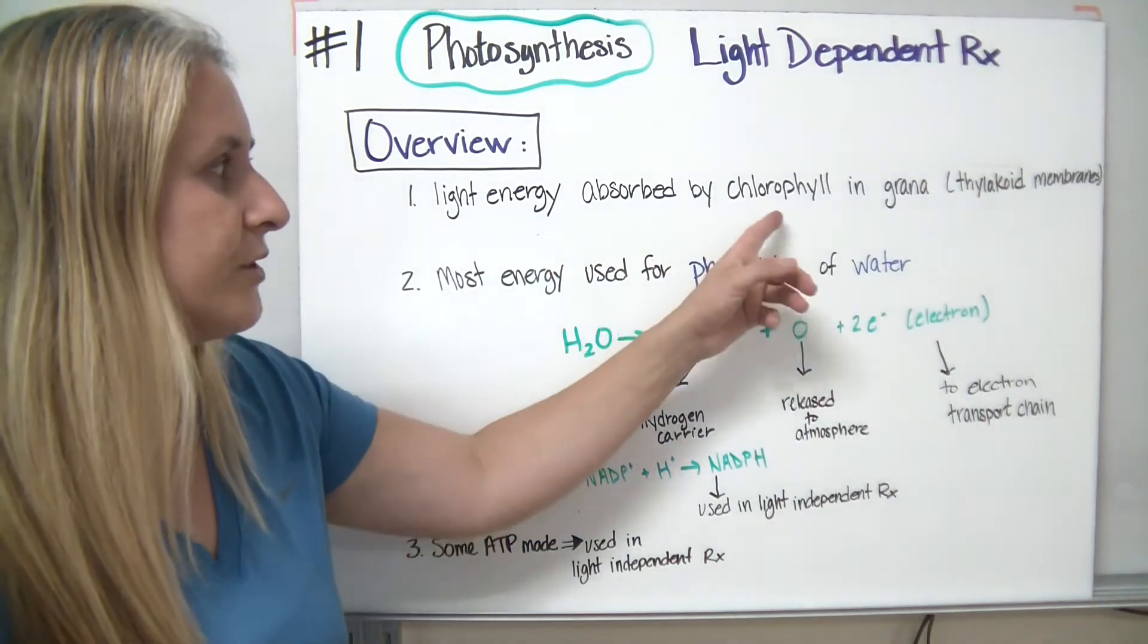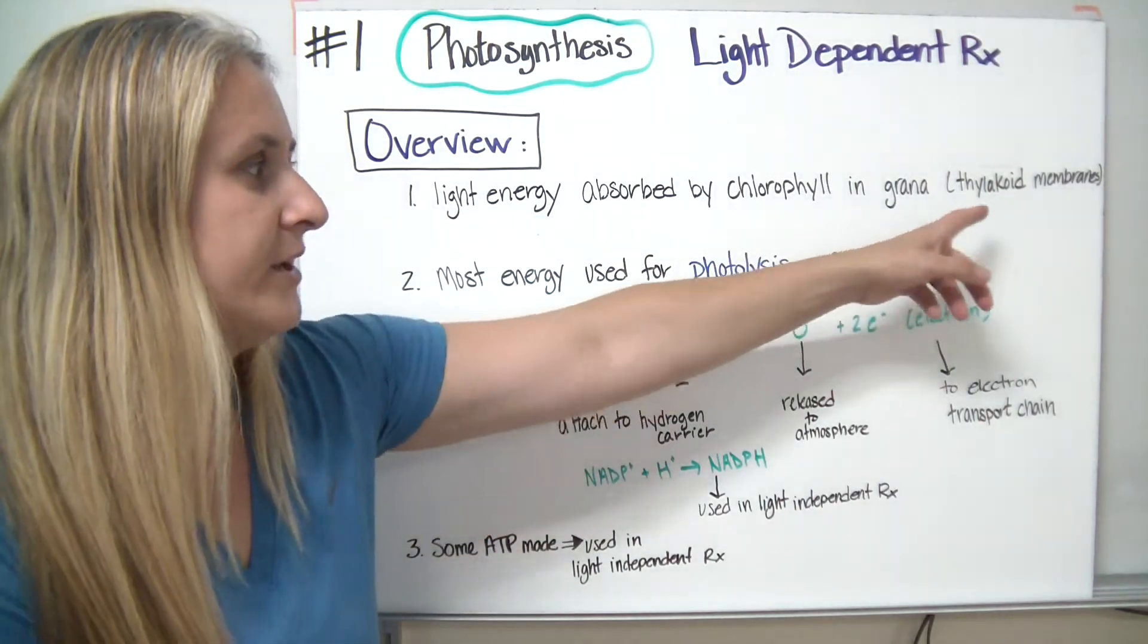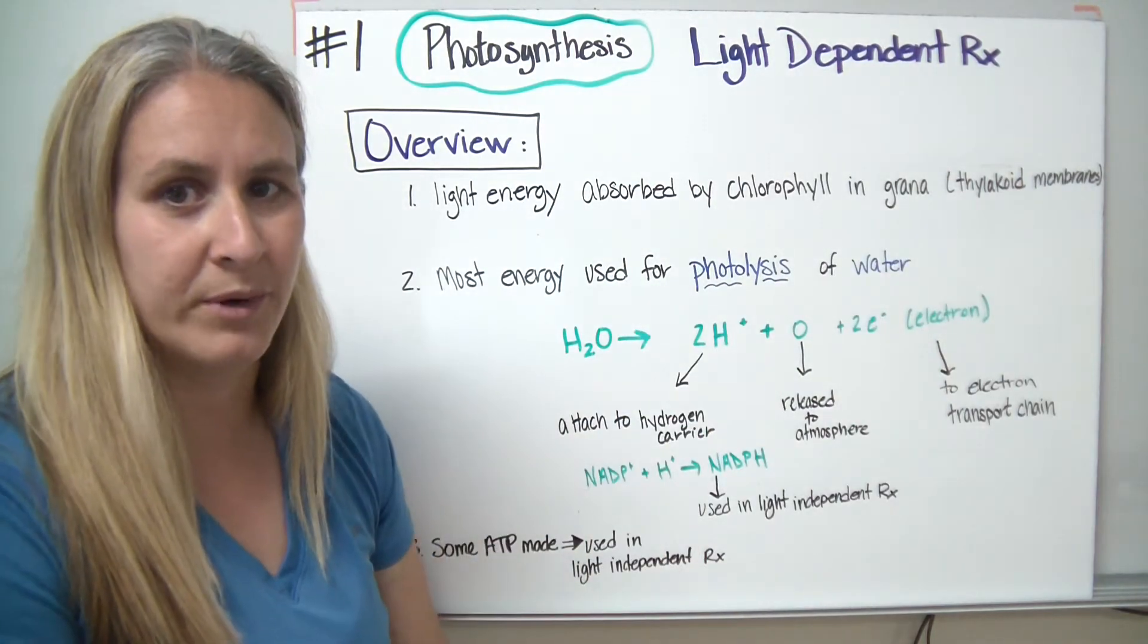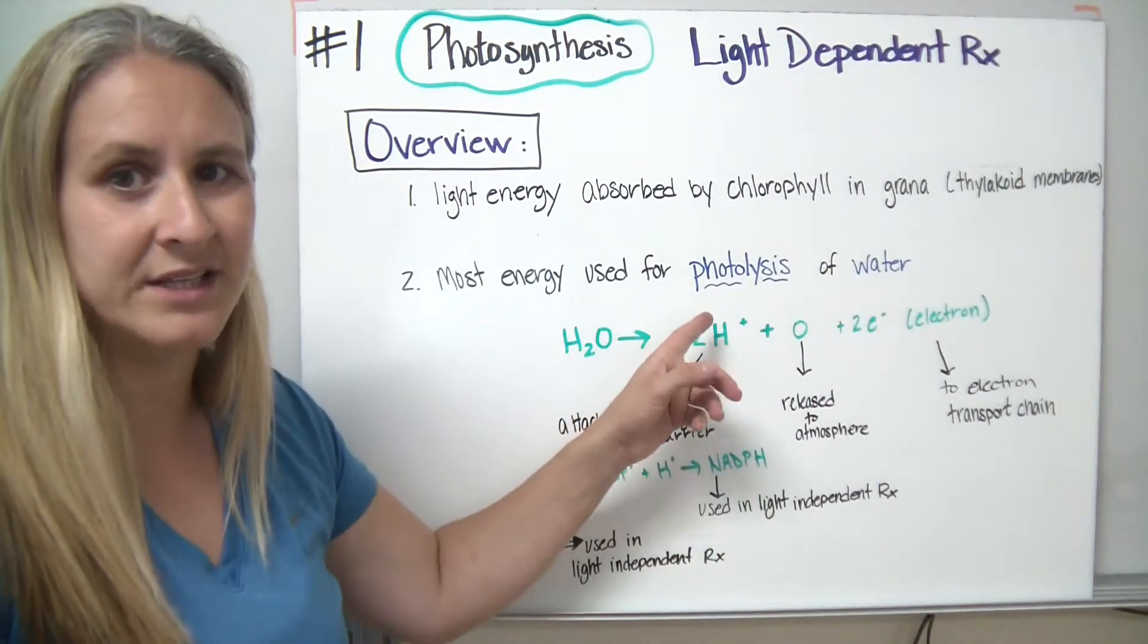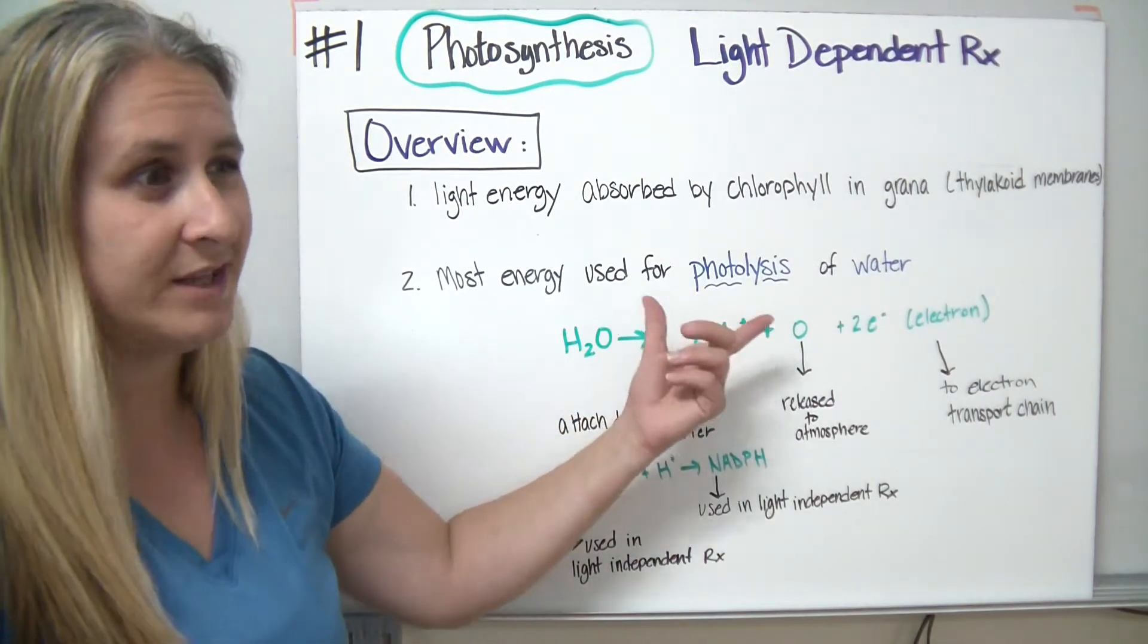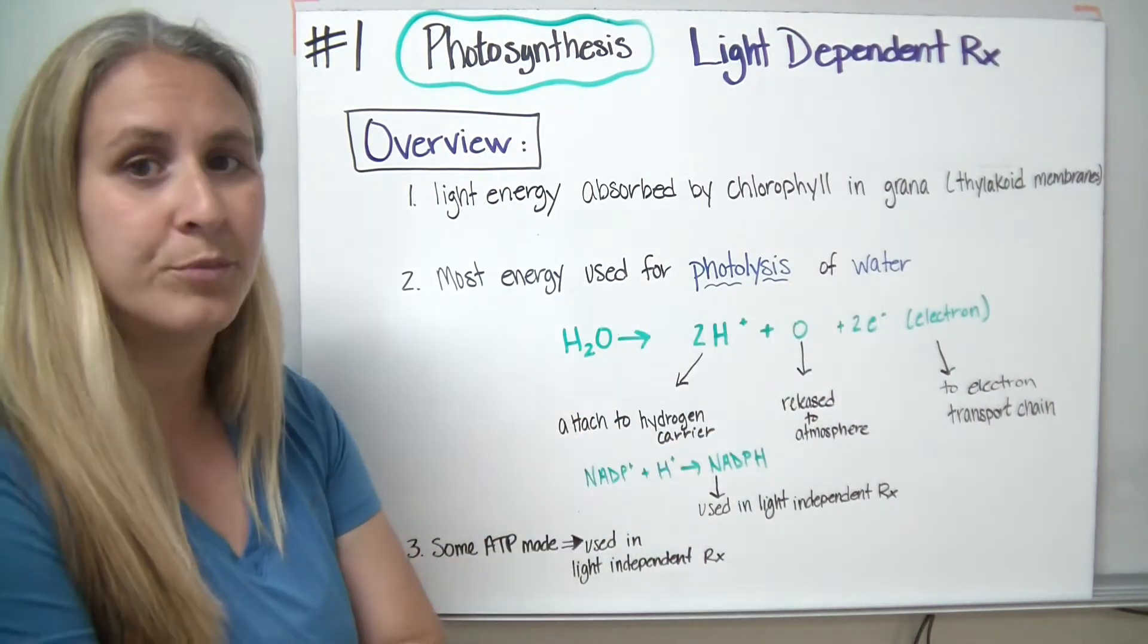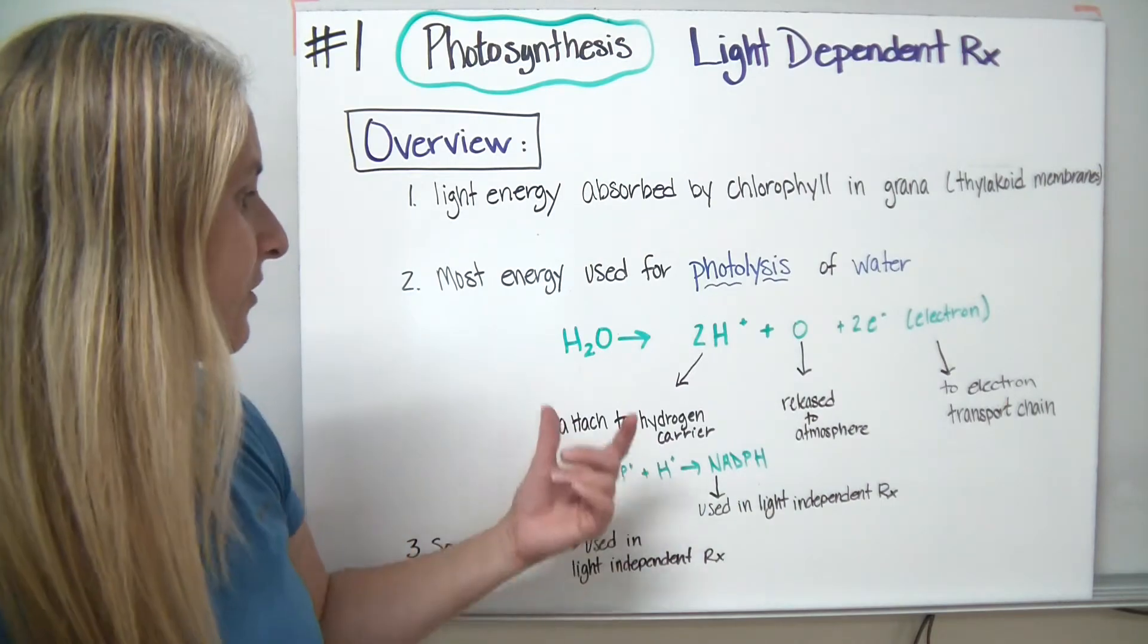Light energy is absorbed by chlorophyll in the grana, which remember those are the stacks of thylakoid membranes. Second step, most energy is used for photolysis. Remember, photolysis means to break apart, and we're breaking apart water in this case using our light energy.